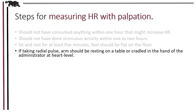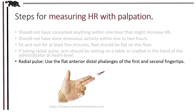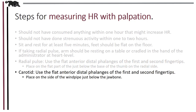We can take heart rate at the radial or carotid site. When measuring with palpation, use the flat anterior distal phalanges of the first and second fingertips — the flat part of the fingers on the opposite side of the fingernail. For the radial pulse, place the flat part of your fingers on the medial-lateral anterior wrist, just below the base of the thumb. For the carotid, place the flat part of your fingers on the windpipe just below the jawbone.